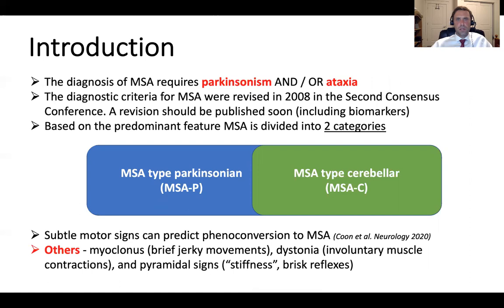The diagnosis of multiple system atrophy requires the presence of motor symptoms — Parkinsonism or ataxia — and some patients will have a combination of both. The diagnostic criteria for multiple system atrophy were revised in 2008 at the second Consensus Conference, are widely accepted and used in clinical practice, and were recently revised again with updated criteria expected to be published very soon.